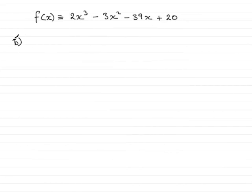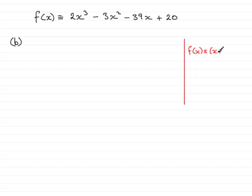In part b, we've been asked to factorise f of x completely. Now we already know that x plus 4 is a factor of f of x, so that means that f of x is identical to x plus 4 multiplied by another factor. This other factor is often called a quadratic factor — it's going to have an x squared term in it, so that's why it's called a quadratic factor. This factor is often called a linear factor. We want to find out what this quadratic factor is.